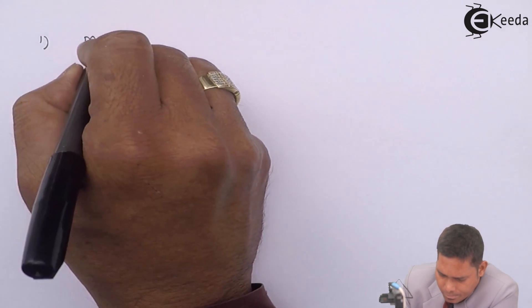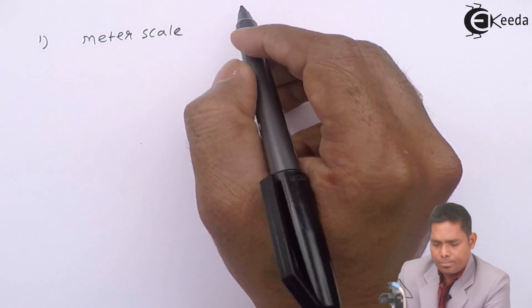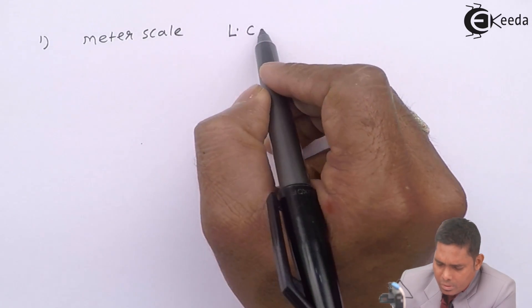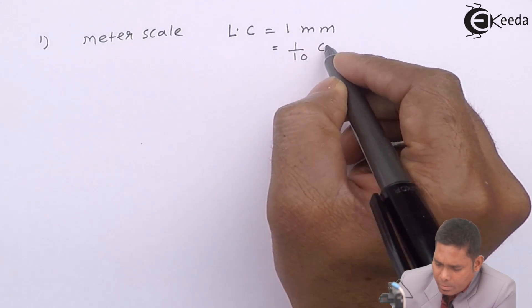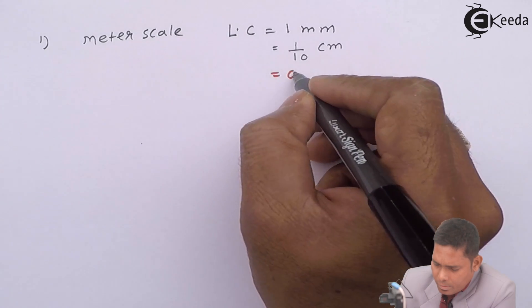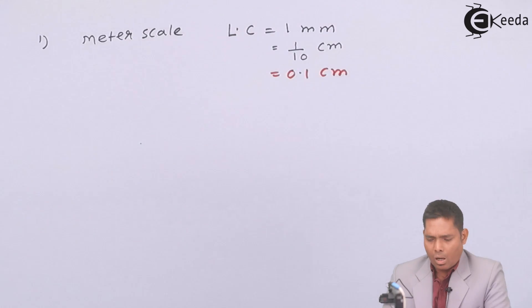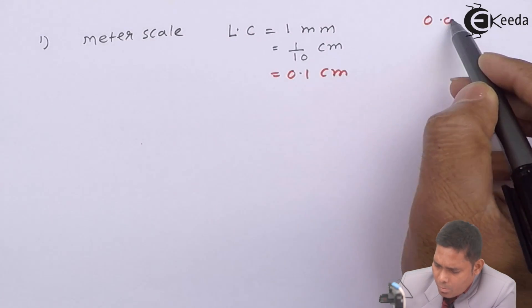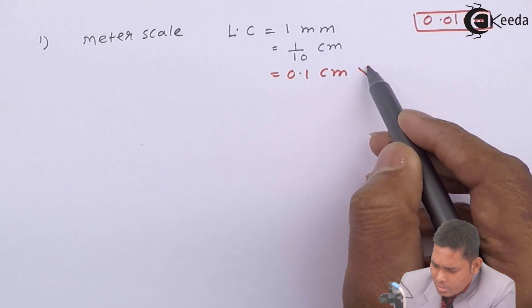The first option is a meter scale. We know that in a meter scale, the least count is 1 mm, which is 1/10 cm, which is 0.1 cm. Our aim is to find an instrument with a least count of 0.01 cm. So this is not matching — the meter scale is not the answer.